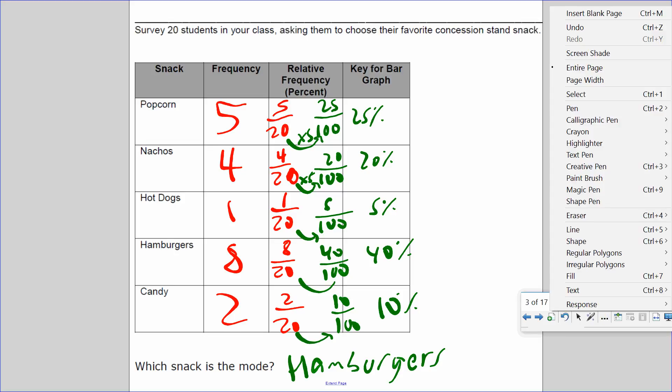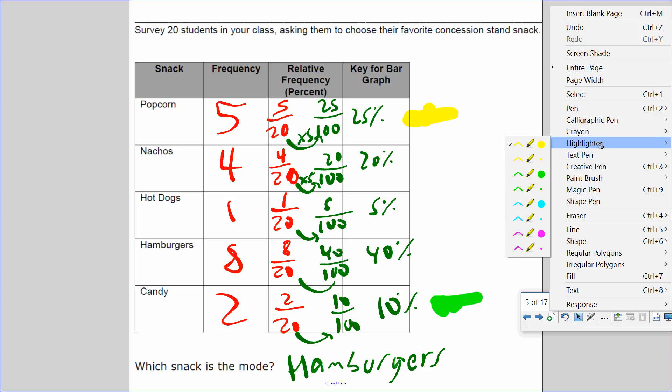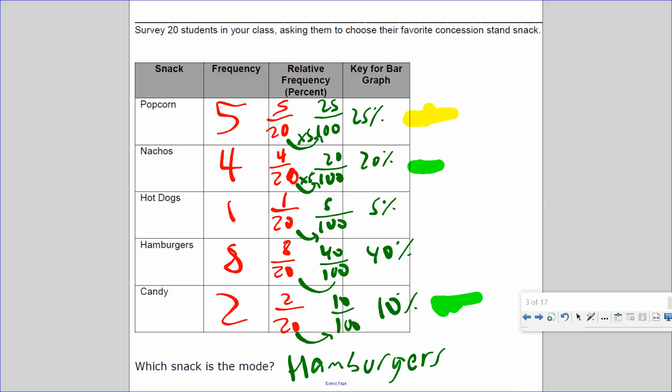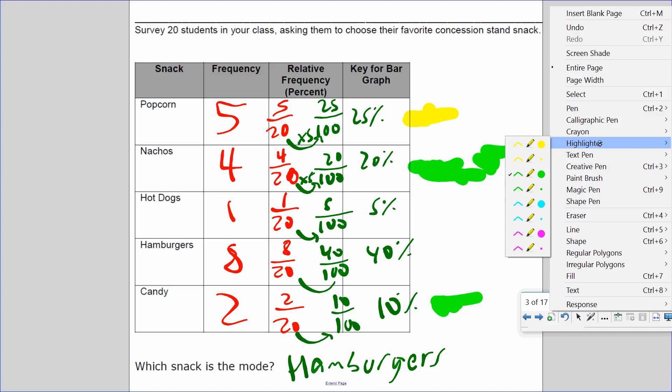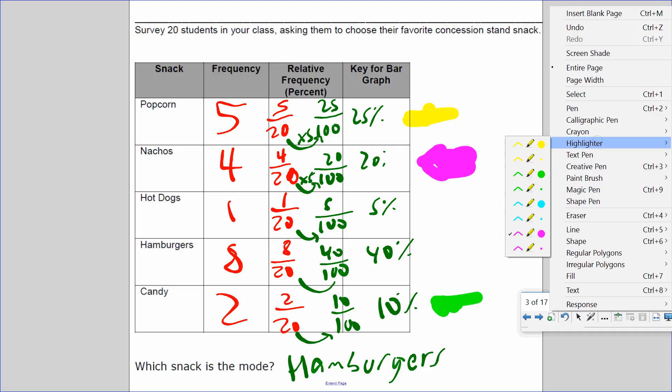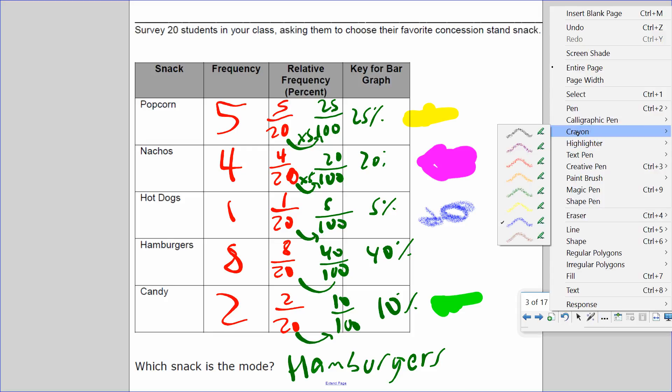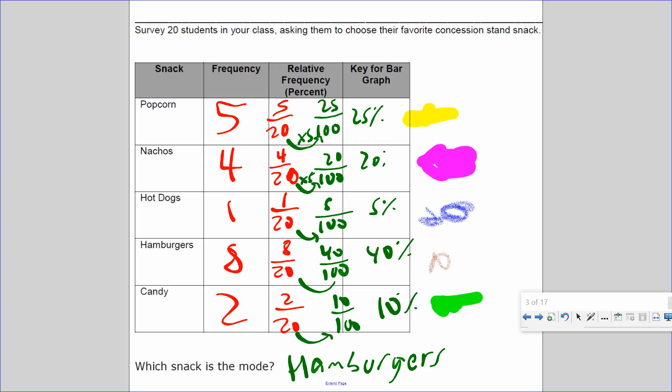So it says make a key. You know what? I'm going to use different colors. I'll use yellow for popcorn, green for candy, blue for hot dog, and this brownish color for hamburger.